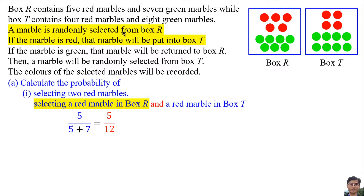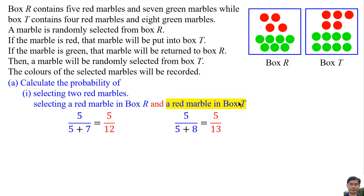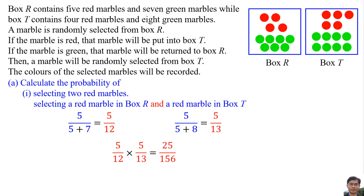A red marble is selected from Box R and put into Box T. So Box T now has one additional red marble, giving 5 red marbles in Box T. The total marbles in Box T becomes 5 plus 8 equals 13, so the probability of selecting a red marble from Box T is 5 over 13. Therefore, the probability of selecting 2 red marbles is 5 over 12 times 5 over 13 equals 25 over 156.